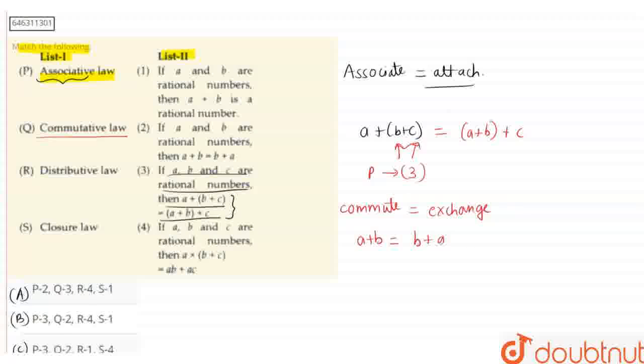Here, you can see that on the left-hand side, A has been replaced by B and B has been replaced by A. Therefore, it's called the commutative law. For option Q, the correct answer is 2.